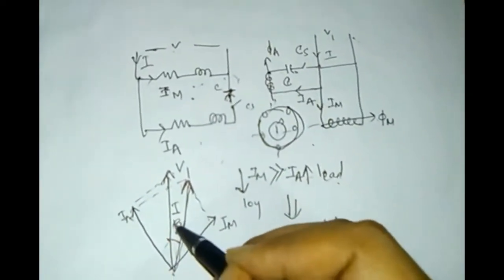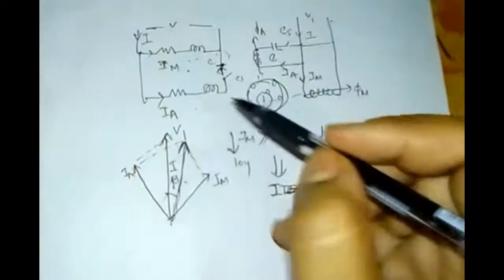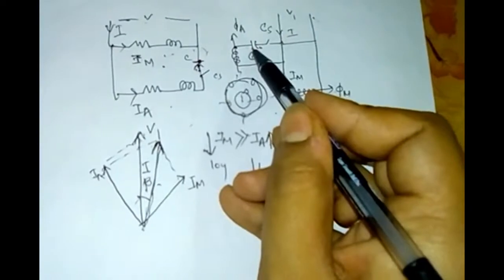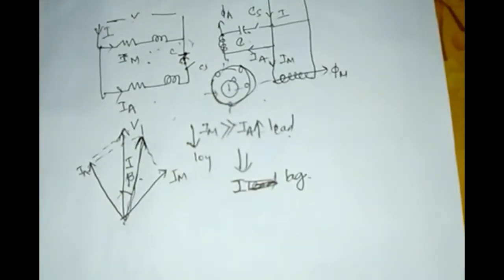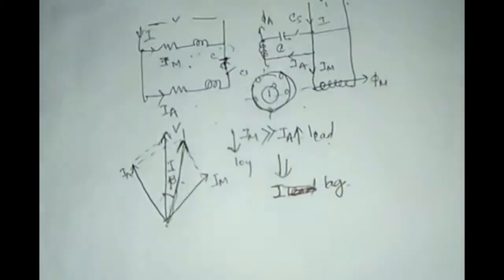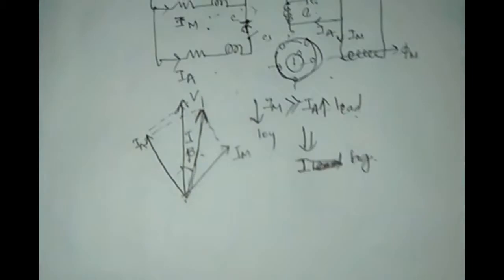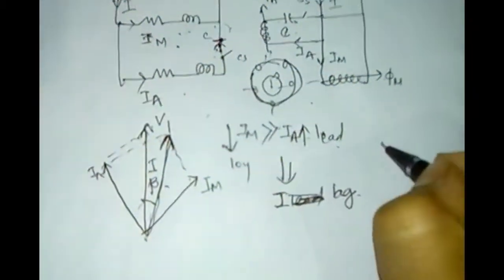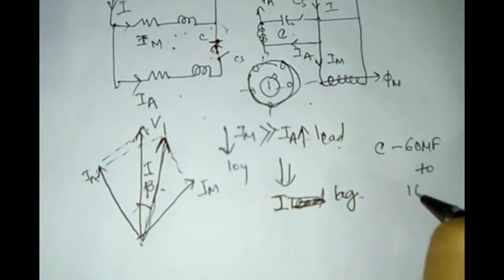With the capacitor split phase motor, the capacitor used in the circuit can vary. Some call it a capacitor start motor, others call it a capacitor start capacitor run motor — there are different types. You can use one single capacitor or two capacitors, which changes the name. The starting characteristics of single phase induction motors give the name, so it is called the capacitor start induction motor.